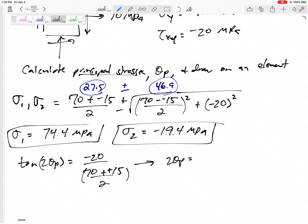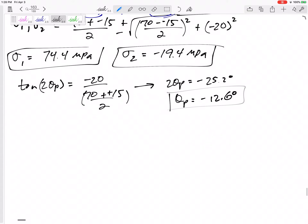Two minuses make a plus. This would give me two theta p. If I do inverse tangent, I'm going to get two theta p of negative 25.2, so my theta p is negative 12.6 degrees. So those are my principal stresses; that's my principal orientation right there.